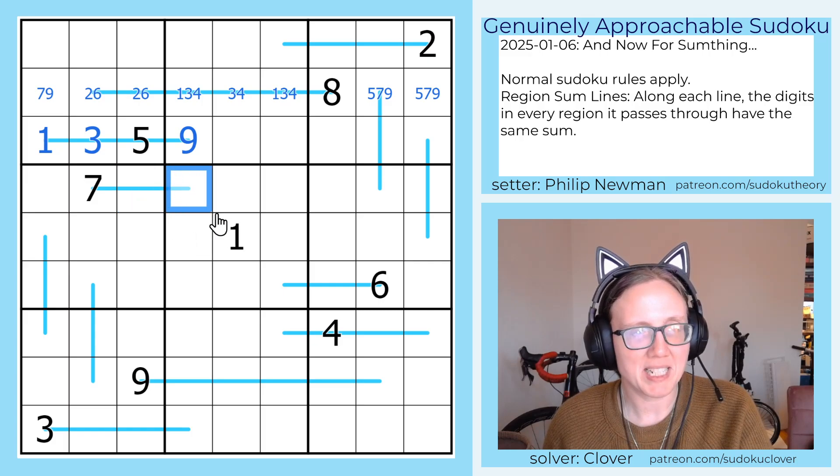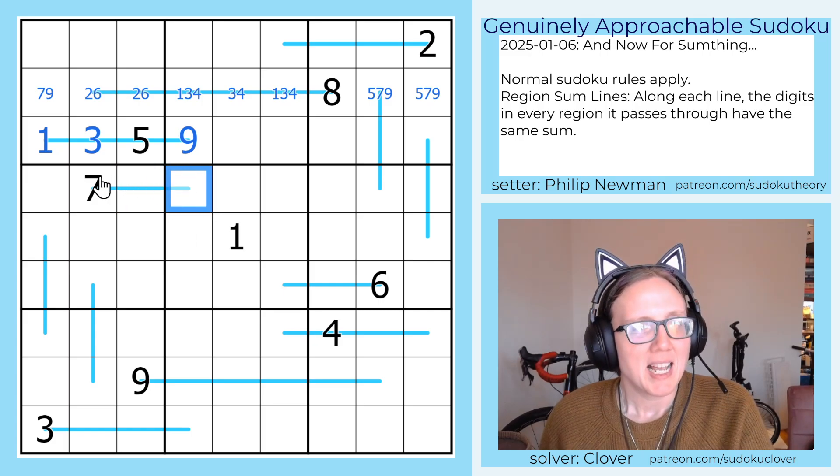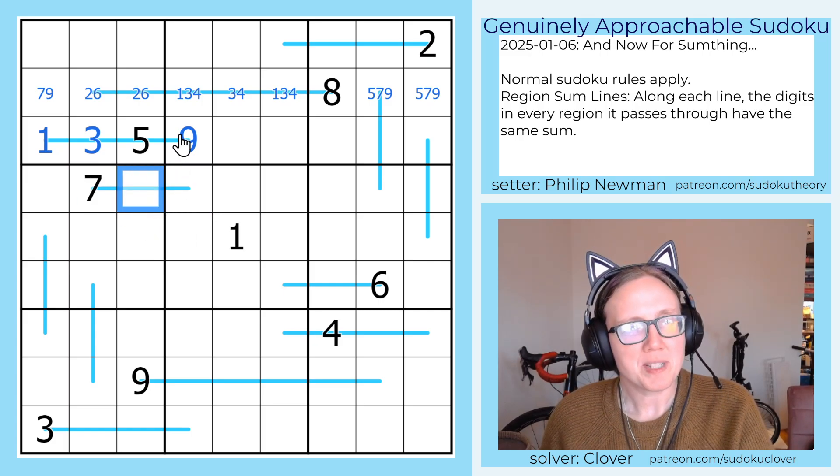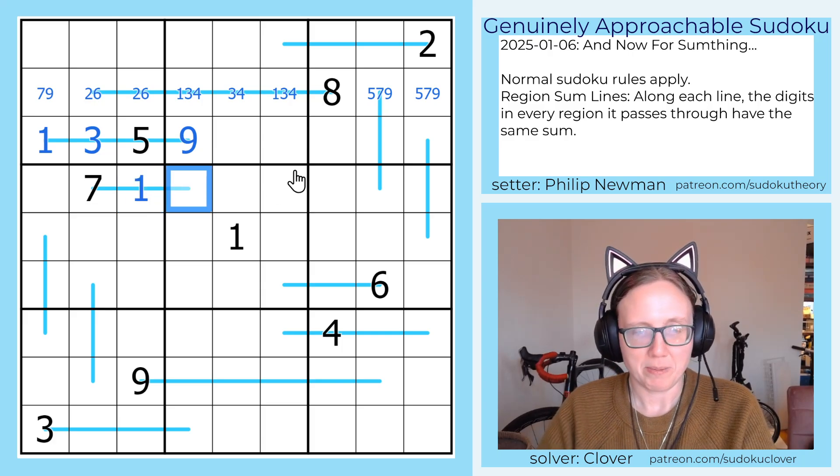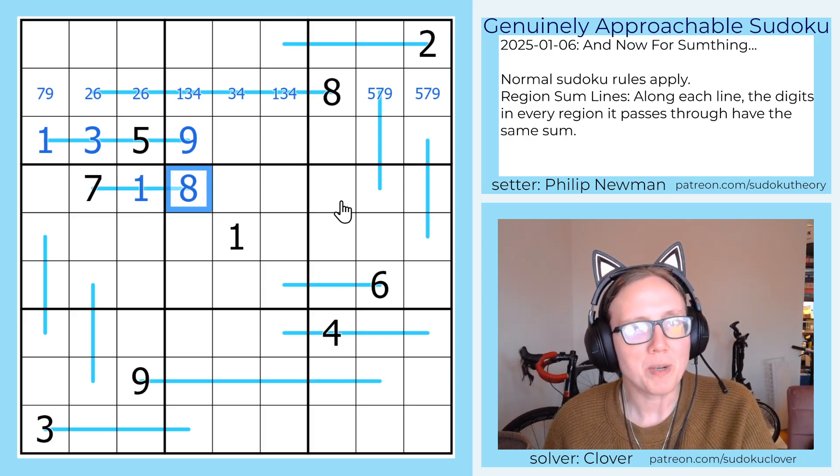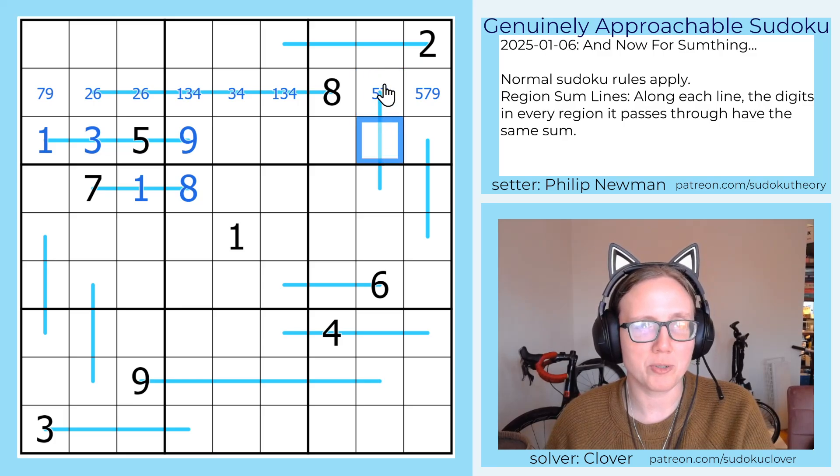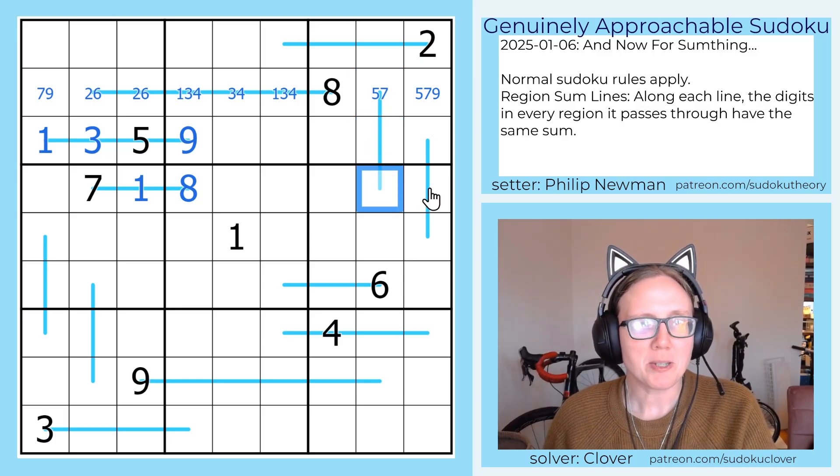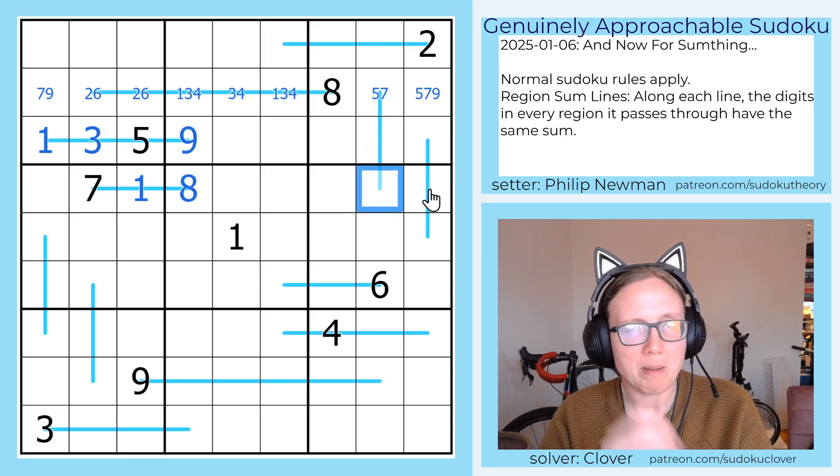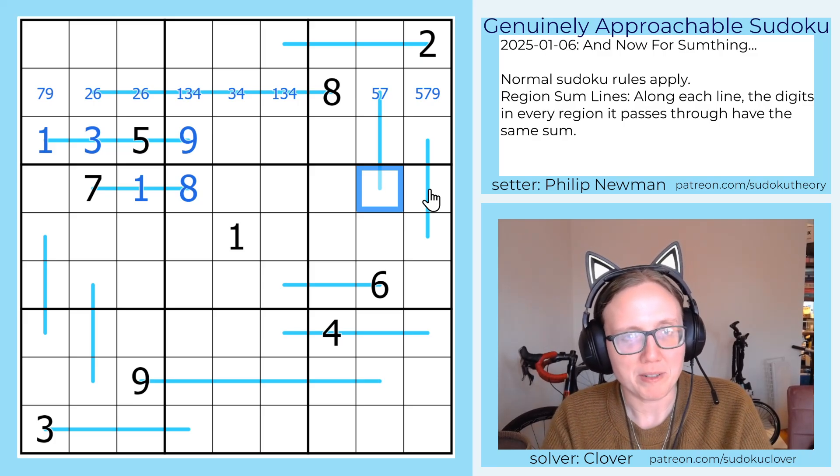Now 7 plus something is equal to this cell. 7 plus 2 is 9, that's not going to work, so it's going to have to be 7 plus 1, which equals 8. I can't put a 9 on this line because whatever goes right here is going to get summed to this. So whatever this is is definitely going to be bigger than 5, and possibly bigger than 7.